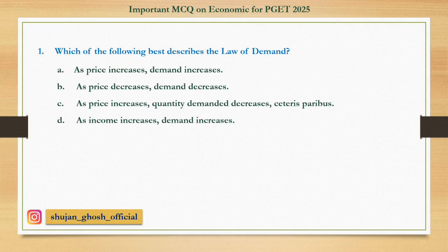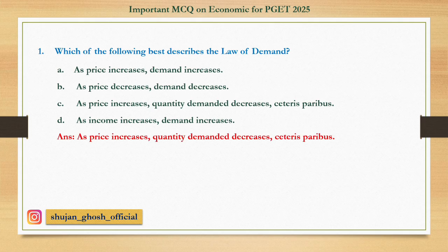Question number one: Which of the following best describes the law of demand? Option A: as price increases, demand increases. B: as price decreases, demand decreases. C: as price increases, quantity demanded decreases, ceteris paribus. D: as income increases, demand increases. Answer: as price increases, quantity demanded decreases, ceteris paribus.